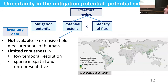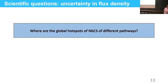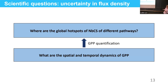In my study, I will focus on narrowing uncertainty in flux density. In contrast to studies focusing on carbon storage, I will use GPP — gross primary production, the carbon flux — to quantify the climate mitigation potential of different NBCS pathways. A prior question in my study is: what are the spatial and temporal dynamics of GPP?